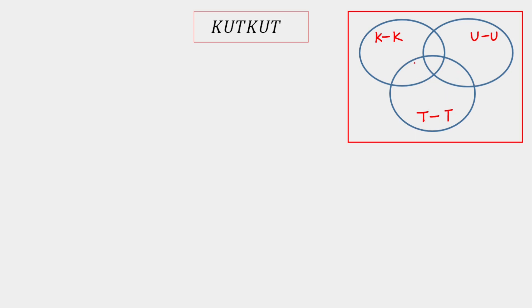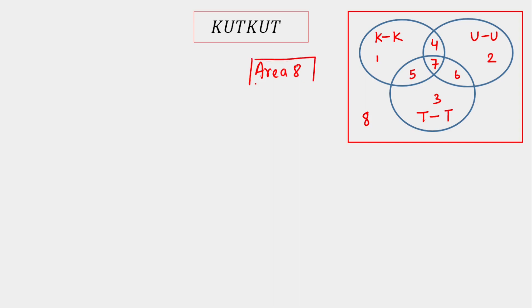I am dividing this into particular areas. Area 1 is where only KK are together, area 2 where only UU are together, area 3 where only TT are together. Area 4 is where KK and UU are together, area 5 and area 6 for the other pairwise intersections, and area 7 in the center where all three — KK, UU, and TT — are together. Area 8 is the outside region where no two alike letters are together, which is our objective.